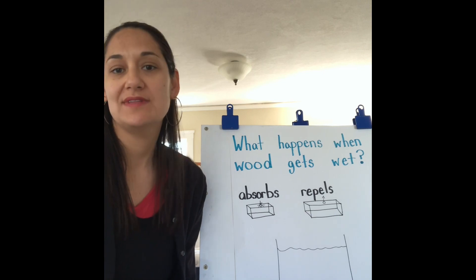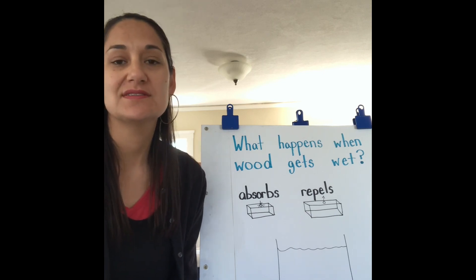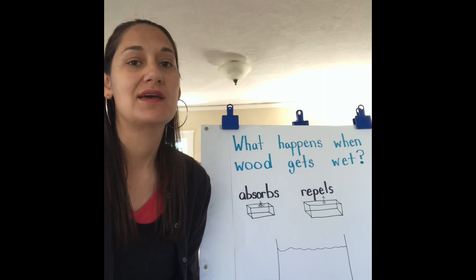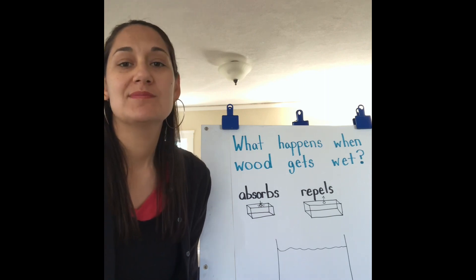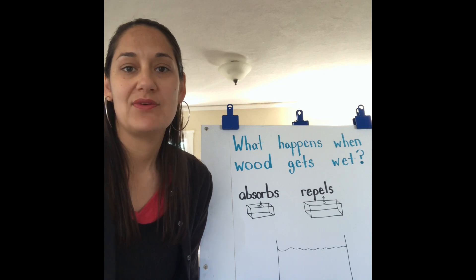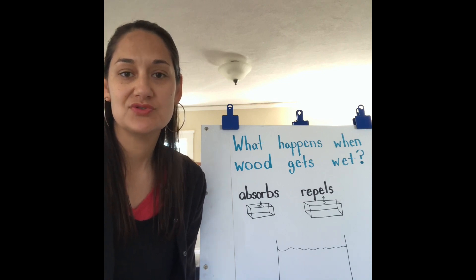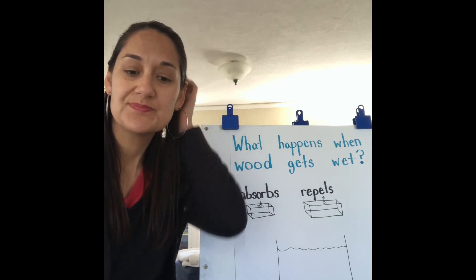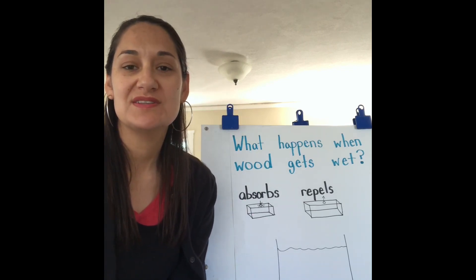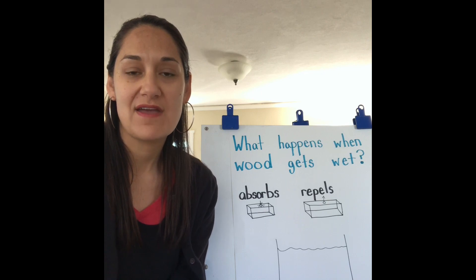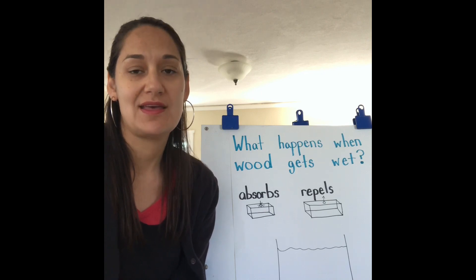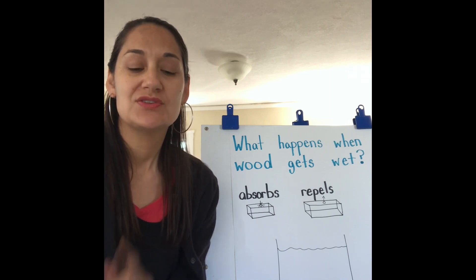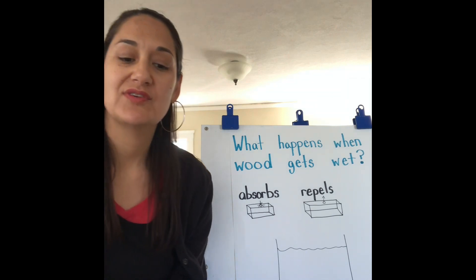So before we left school, we were starting to observe and talk about wood. I think you guys remember that wood comes from trees, and there's lots of different kinds of trees, so there's different kinds of wood that come from those different kinds of trees. So I'm going to show you a few different pieces of wood today, and we're going to look at them and observe them and see what happens when they get wet. Let's take a look at the different kinds of wood.